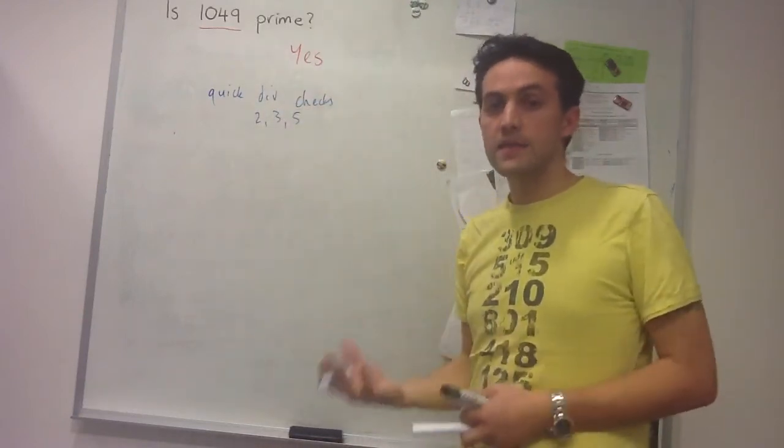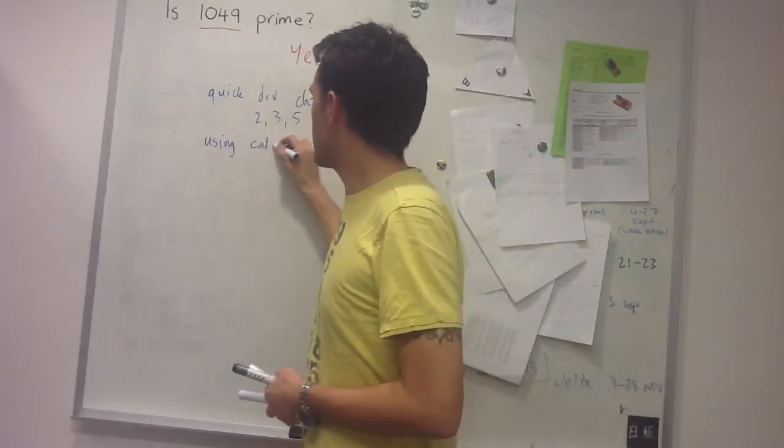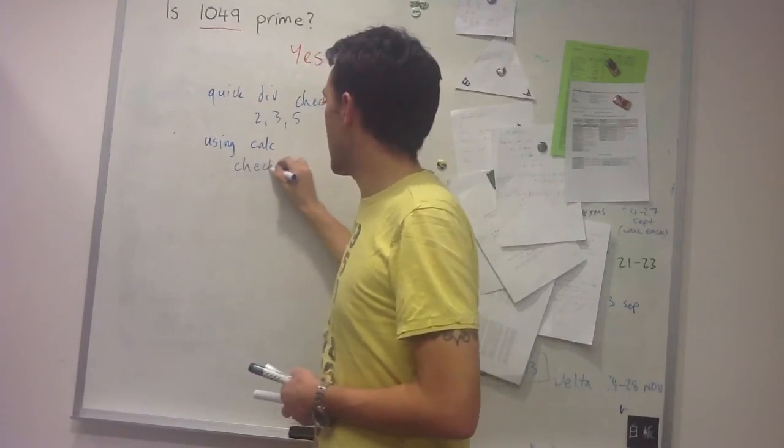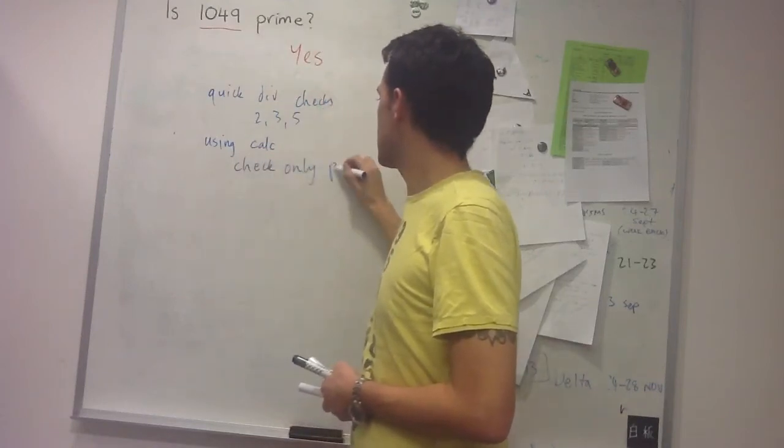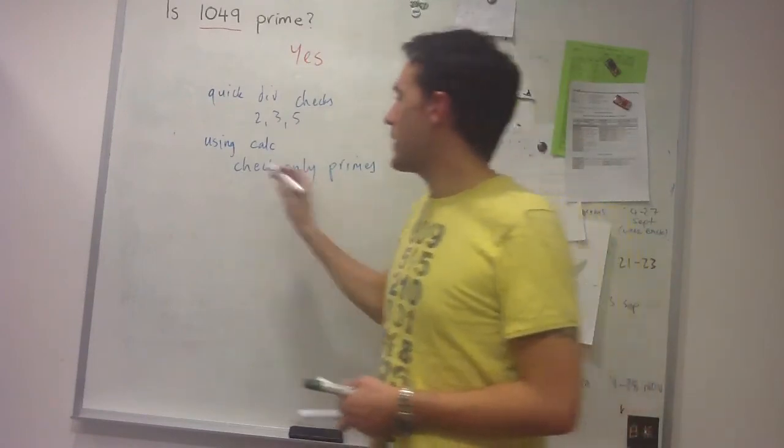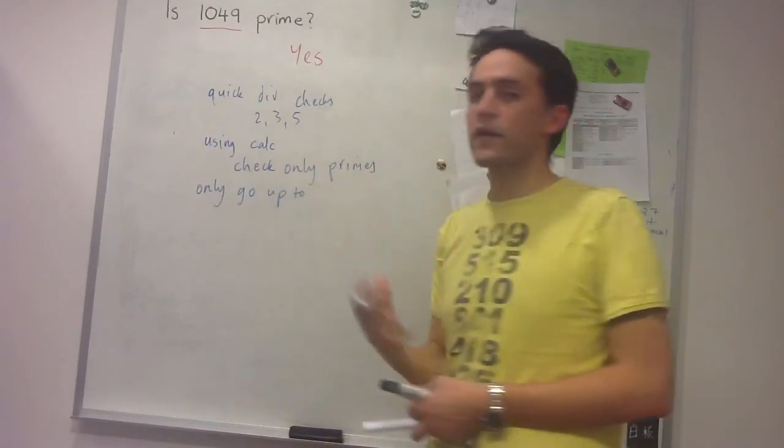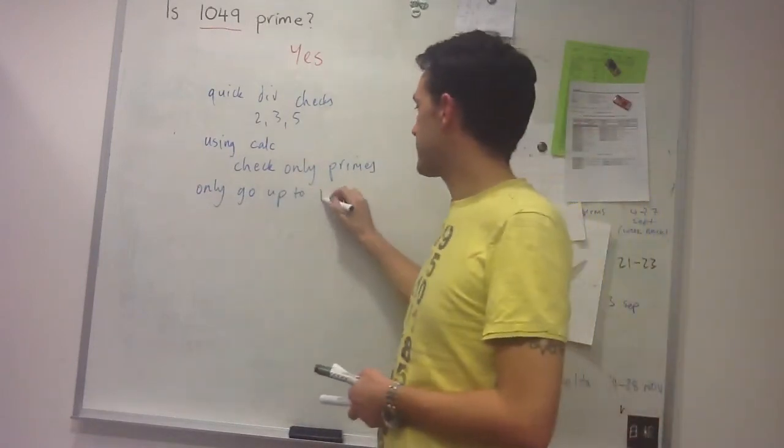And then at this stage, we can use a calculator, and we want to check only primes. And we only go up to approximately the square root.